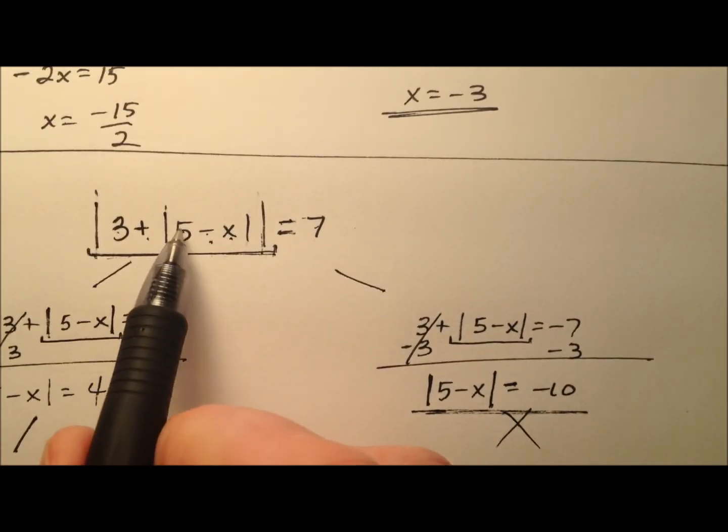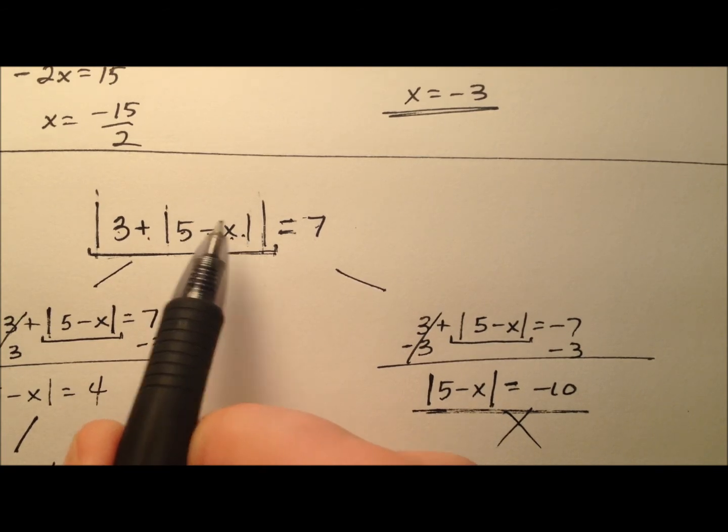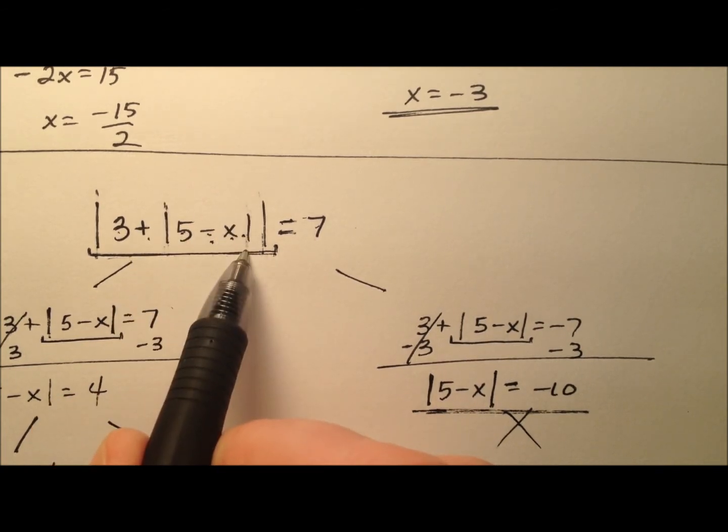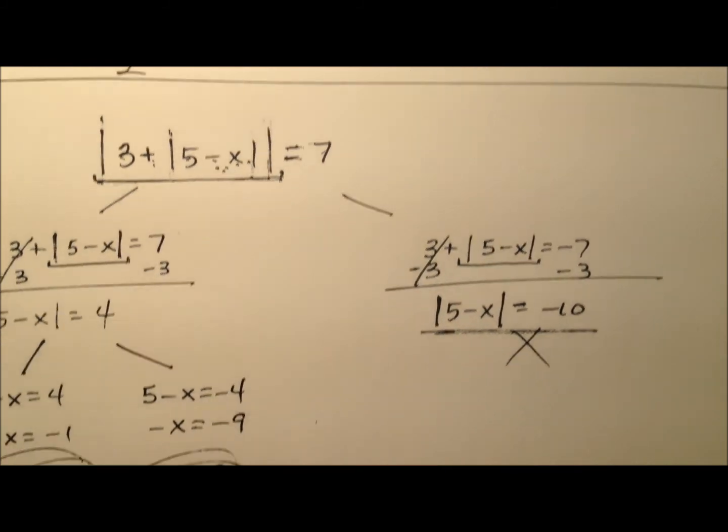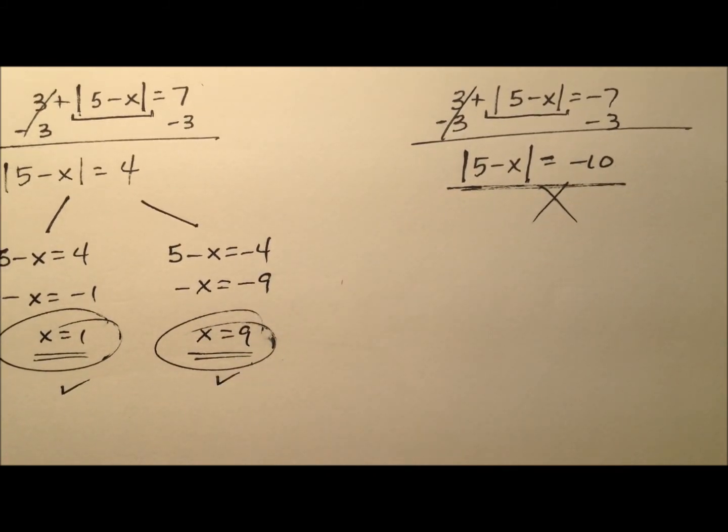So let's try 9. 5 minus 9 is negative 4 and the absolute value of negative 4 is 4. 3 plus 4 is 7 and the absolute value of that again is 7. So that one works as well.